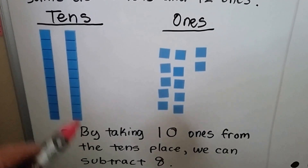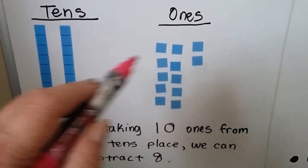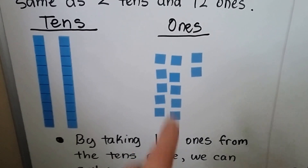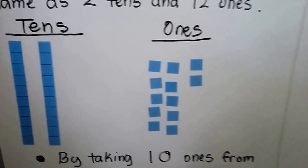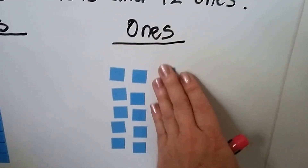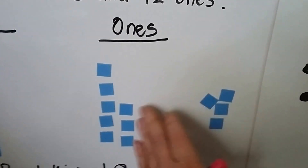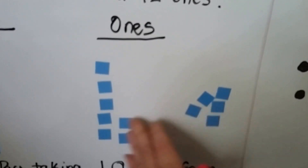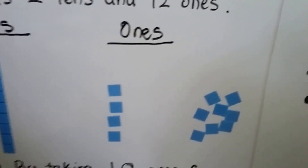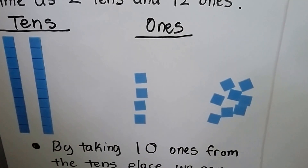By taking 10 ones from the tens place, now we can take the 8 away, because we have 12 ones here. So we can take 8 of these away: 1, 2, 3, 4, 5, 6, 7, 8. That's going to leave 2 tens and 4 ones.